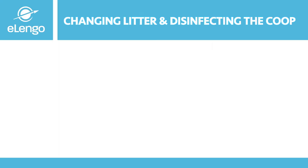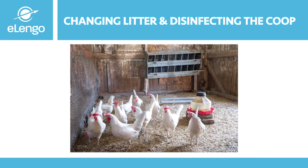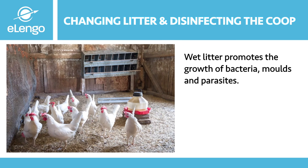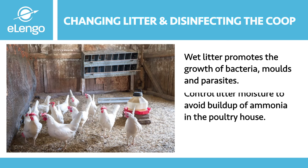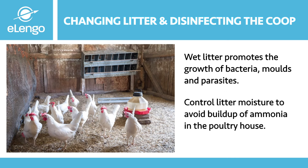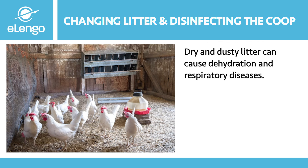Changing the litter and disinfecting the chicken coop. Litter management is of great importance in a poultry farm. Wet litter promotes the growth of pathogenic bacteria, molds, and parasites such as coccidiosis. Controlling litter moisture is one of the most critical steps in avoiding ammonia build-up in the poultry house. Litter turning should commence on noticing the onset of caking — by turning we mean helping aerate the litter so that it decomposes. Litter that is too dry and dusty can also lead to problems such as dehydration and respiratory diseases.